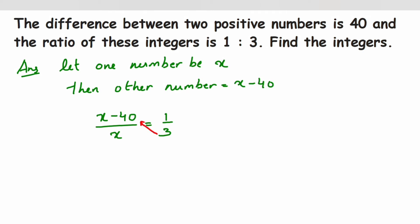Multiply 3 with this numerator and x with this numerator. By doing this we'll get 3 into x minus 40 equals 1 into x. Now open the brackets, so 3 into x is 3x minus 3 into 40 is 120 equals x.